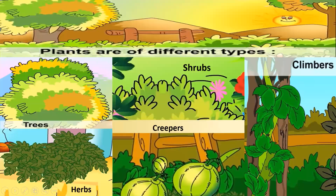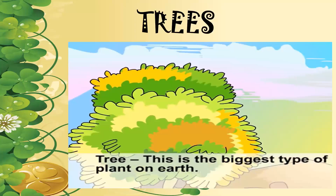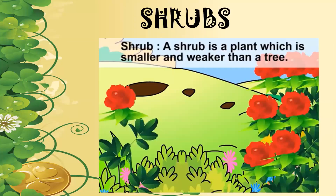As you can see here, you see pictures of a tree, a shrub, a climber, herbs, and creepers. Trees are the biggest type of plants on earth — they are very huge in comparison to the other plants we see around. Shrubs are very small, short-heighted plants found on the sides of parks or grounds. They are weaker than a tree, which has a very strong bark or trunk to hold it.